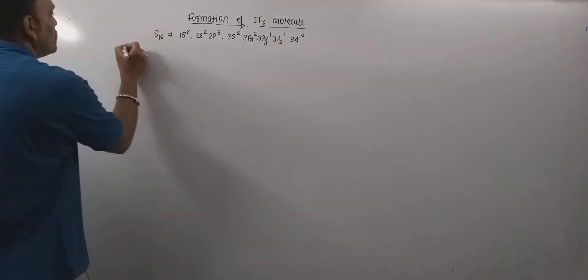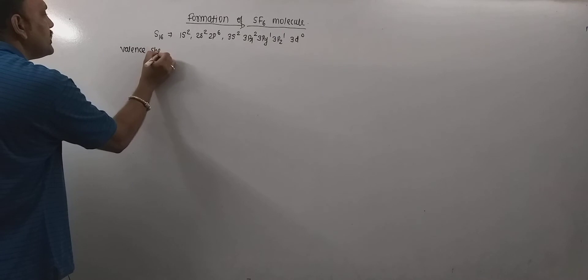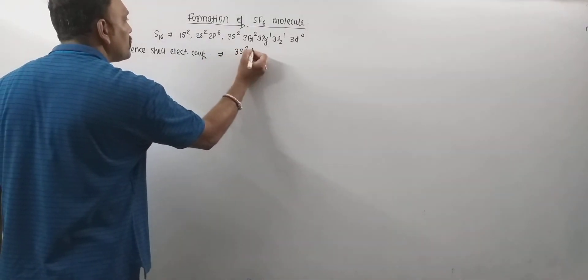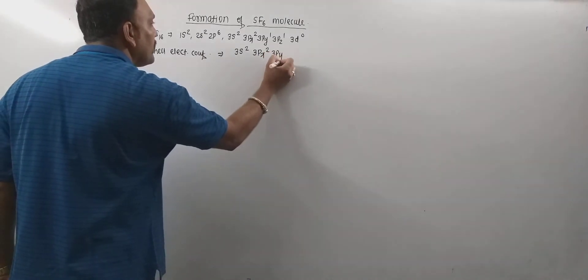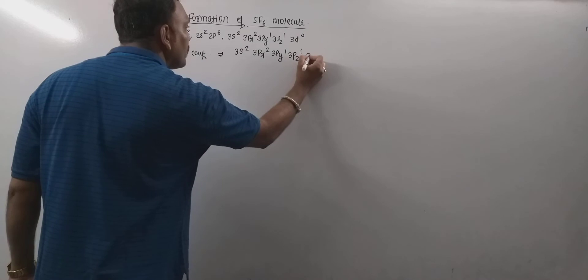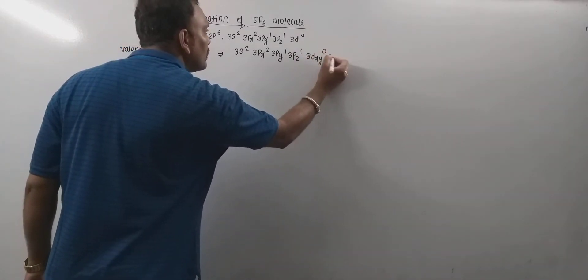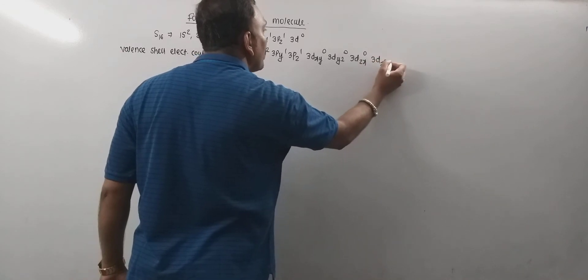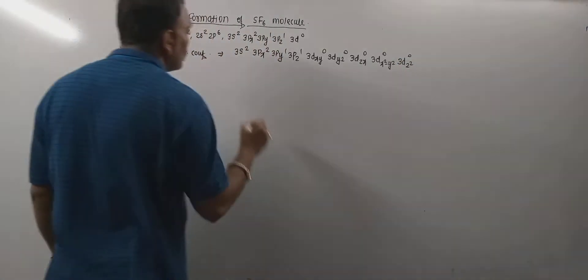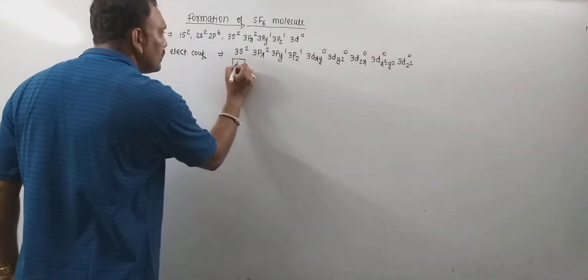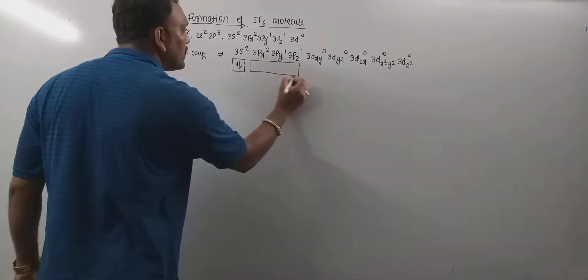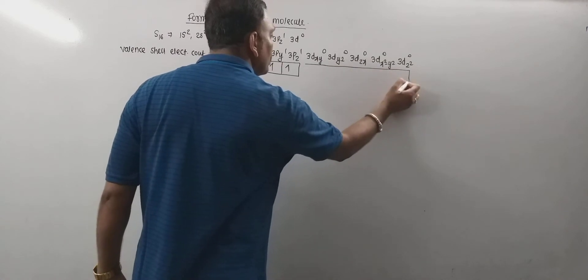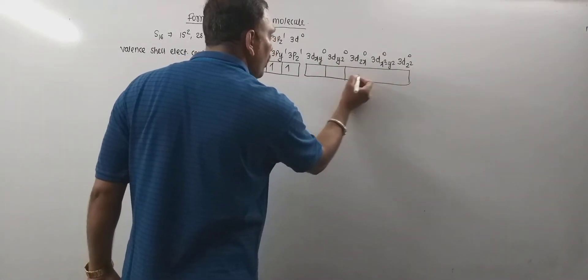The valence shell electronic configuration of sulfur can be 3s2, 3px2, 3py1, 3pz1, 3d0, that is 3dxy0, 3dyz0, 3dzx0, 3dx2-y20 and 3dz2. Now, box diagrams which can be drawn for this, each in this manner. This is the box diagram for sulfur in ground state. So, in this manner, one can draw the box diagram.